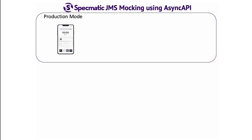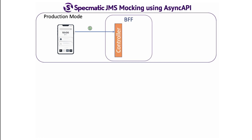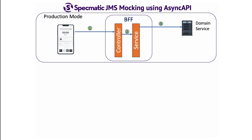Let's take the example of a consumer which makes a request to an application. The request is received by the controller, which in turn invokes the service layer. The service layer fetches data from a domain service or an HTTP dependency and then drops a message onto a JMS queue, say something like ActiveMQ. Finally, the service layer responds back to the controller, which in turn responds back to the consumer.